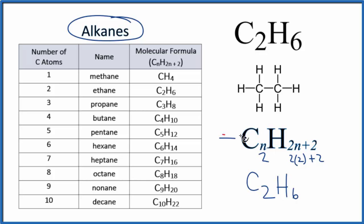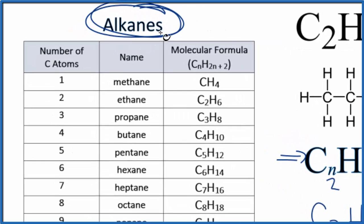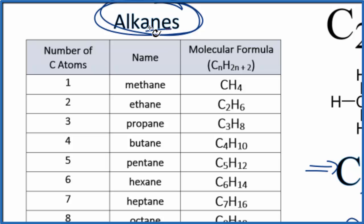Since it follows this formula, we know that C2H6 is an alkane, and we're going to end the name with -ane. The beginning depends on the number of carbons.